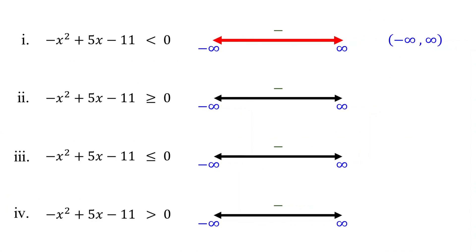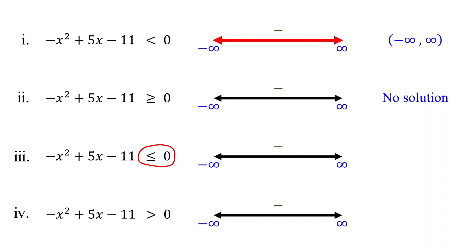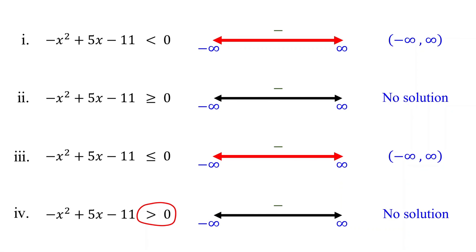Let's see what happens if we change the inequality sign. The first one is what we have just solved. The second inequality is greater than or equal to 0. There is no interval where the quadratic expression is either positive or 0. Therefore, no values of x make the inequality true — no solution. The third inequality is less than or equal to 0. The quadratic expression is negative for the entire interval. Therefore, the solution is all real numbers. The last inequality is greater than 0. There is no interval where the quadratic expression is positive. Therefore, no solution to this inequality. In general, when the quadratic equation has no real solution, the solution to the quadratic inequality is either all real numbers or no solution at all.